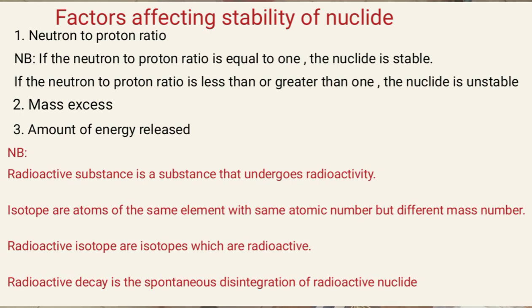A radioactive substance is a substance that undergoes radioactivity. Isotopes are atoms of the same element with the same atomic number but different mass number, and what brings the difference in mass number is the number of neutrons. A radioisotope is an isotope which is radioactive in nature. Radioactive decay is the spontaneous disintegration of a radioactive nuclide.